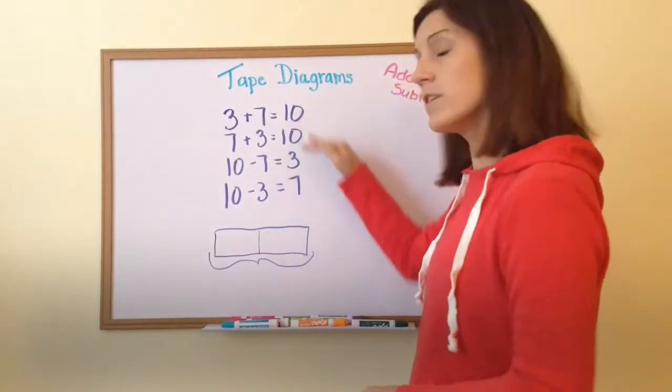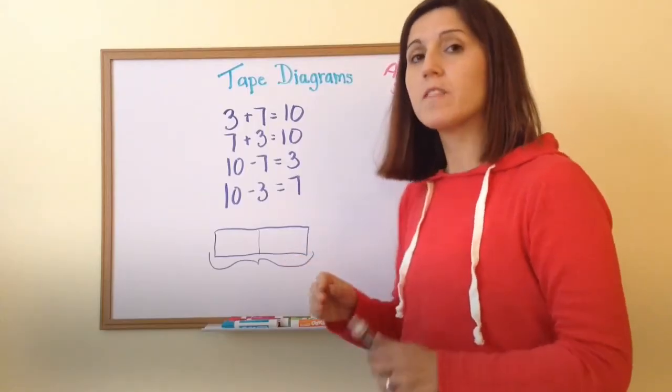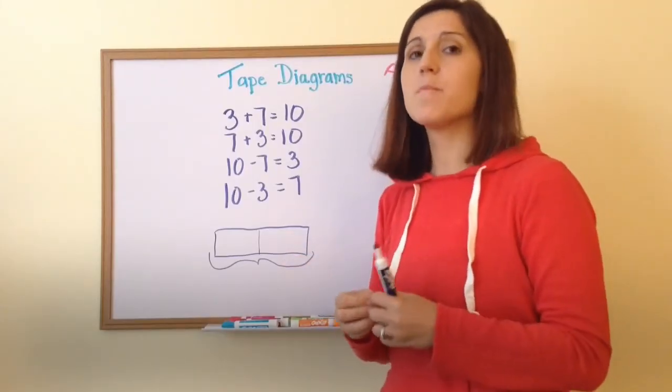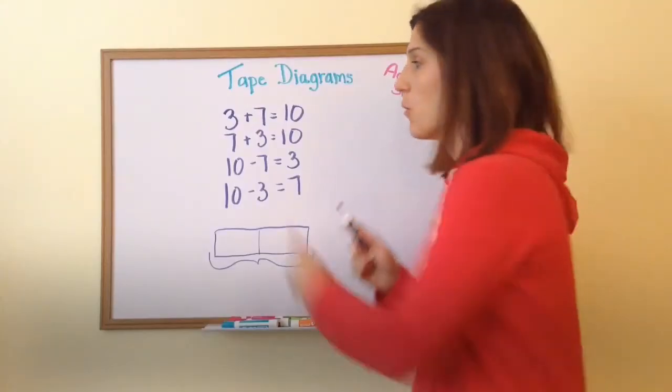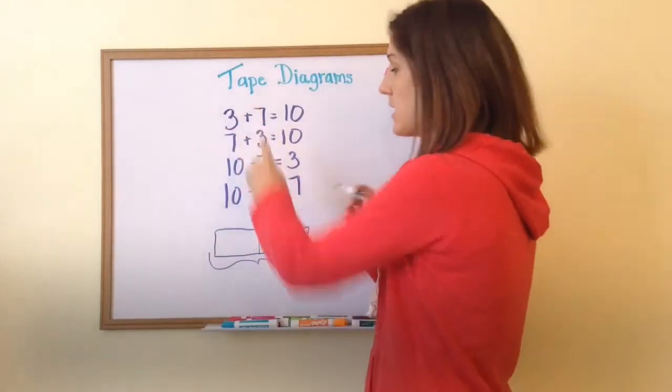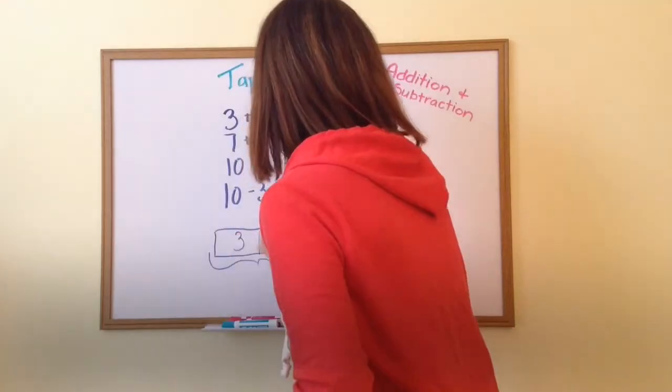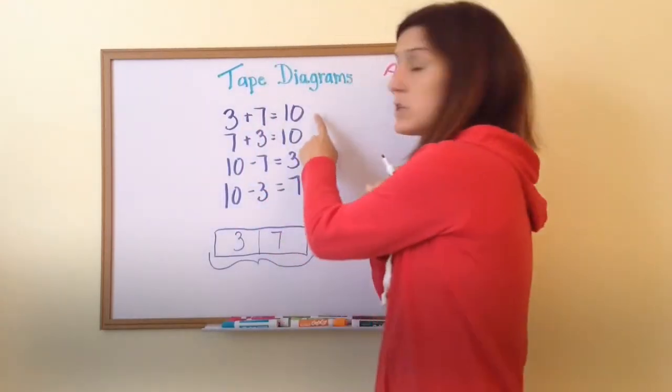Notice that in all of these four equations we have the same two parts that make up a bigger whole. We're just writing it different ways. We have the parts of three and seven making up the total ten.